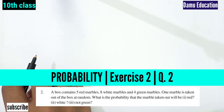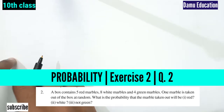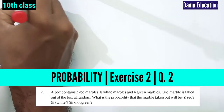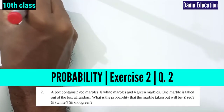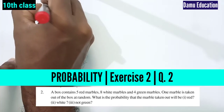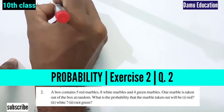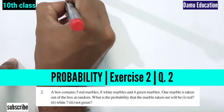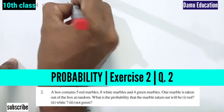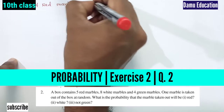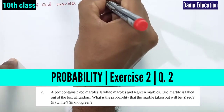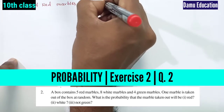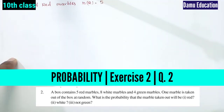A box contains 5 red marbles. So let's write the number of red marbles — n of R — that is 5.